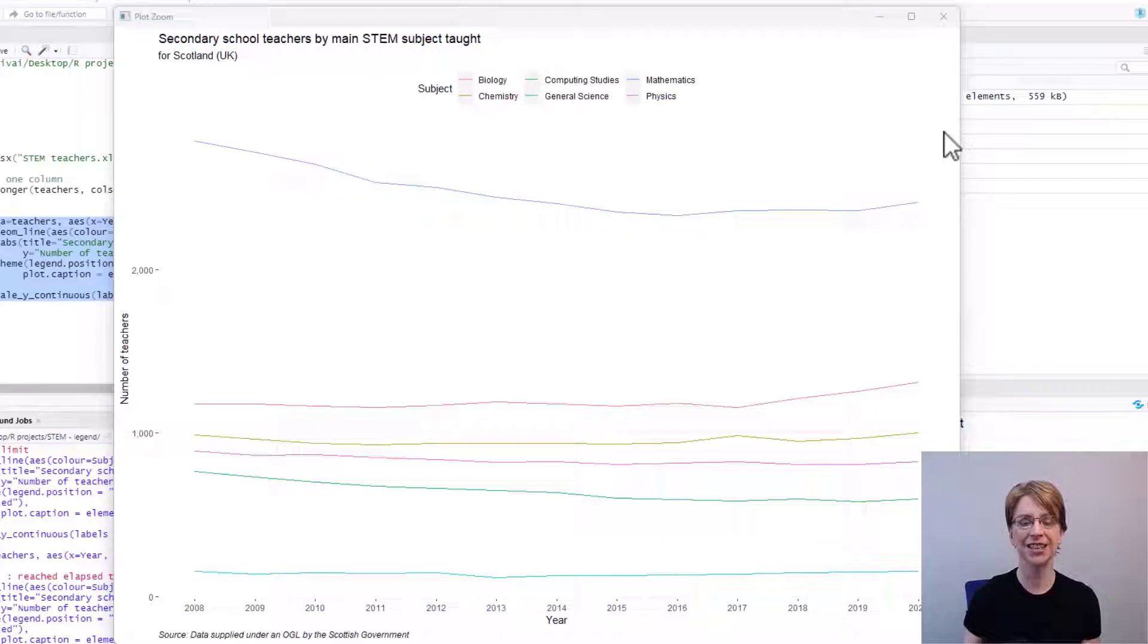You can see that the legend has been moved to the top of the diagram. With legend.position you can move the legend to other locations such as below the diagram using the word bottom or to the left of the diagram using left.